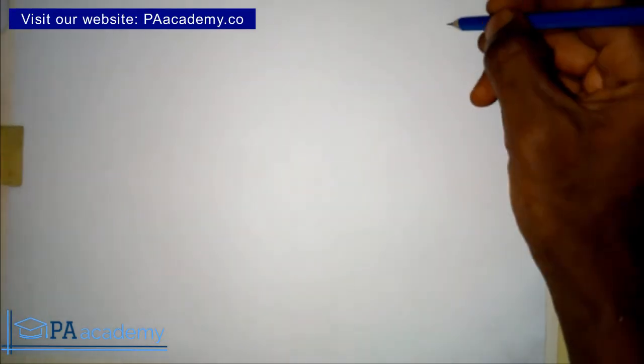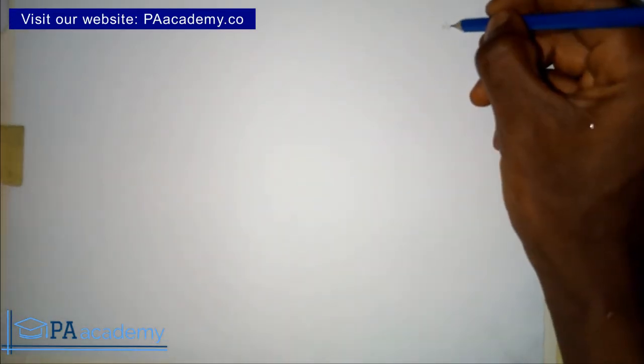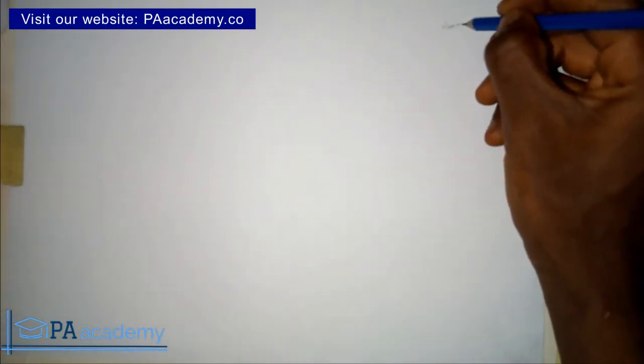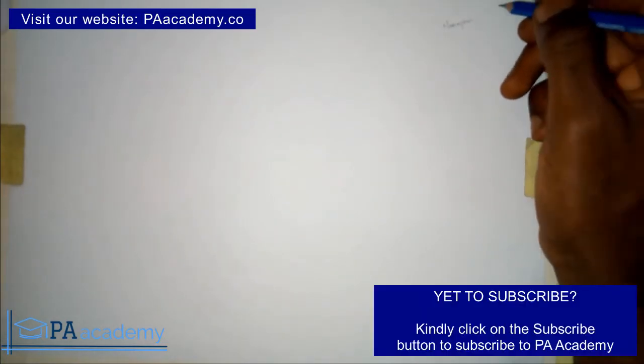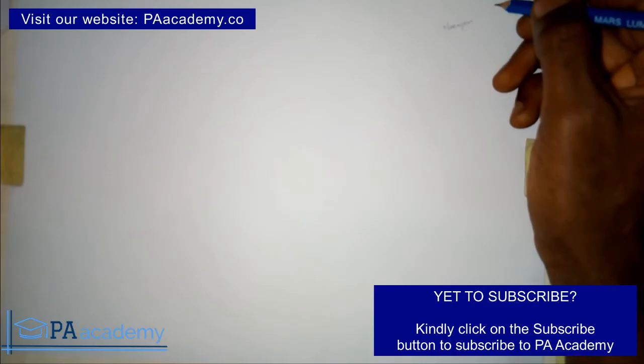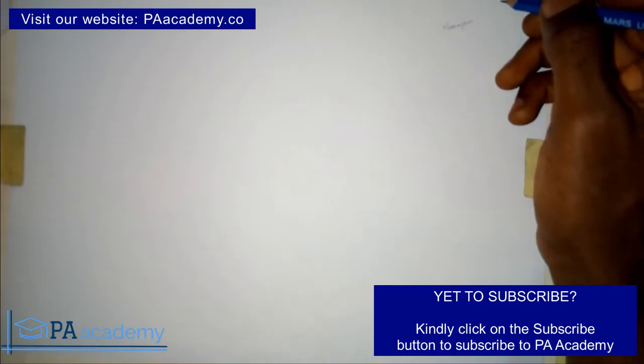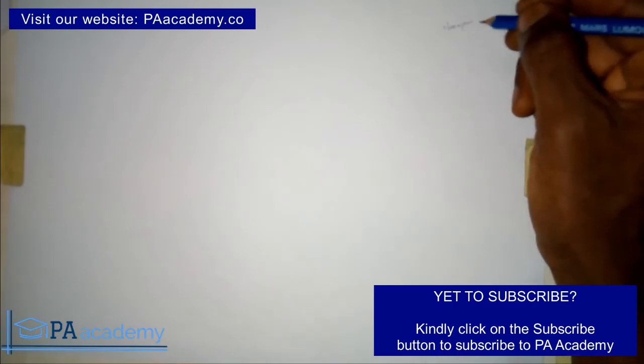Hello everyone and welcome to PA Academy. In this video I'm going to be taking you through step by step how to draw a regular nonagon when given the length of the side. A nonagon has nine sides, and when we talk about a regular nonagon that means all the sides are equal.